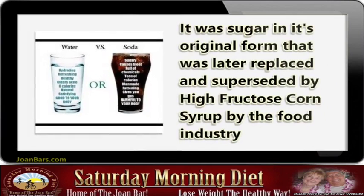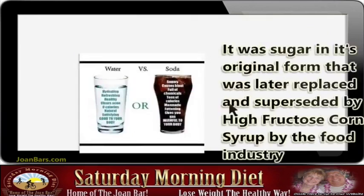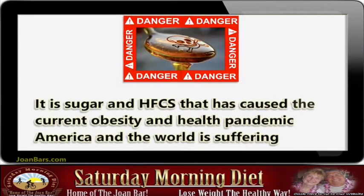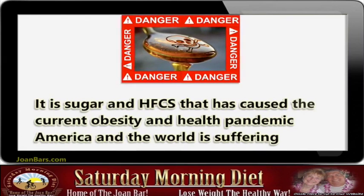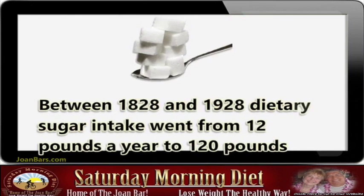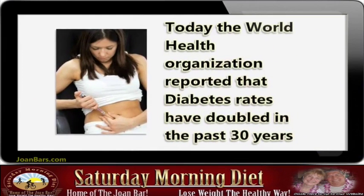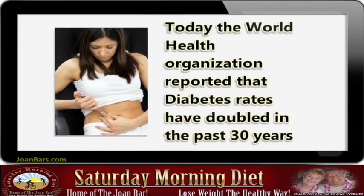Sugar in its original form was later replaced and superseded by high fructose corn syrup by the food industry. It is sugar and HFCS that has caused the current obesity and health pandemic America and the world is suffering. Between 1828 and 1928, dietary sugar intake went from 12 pounds a year to 120 pounds.